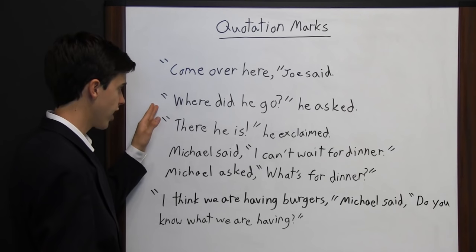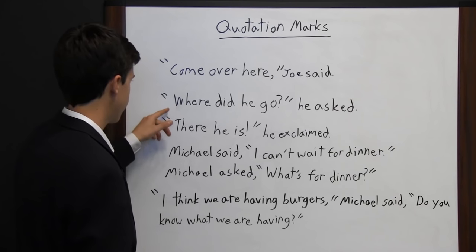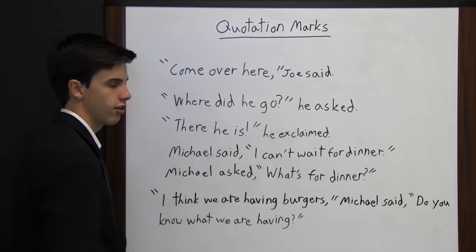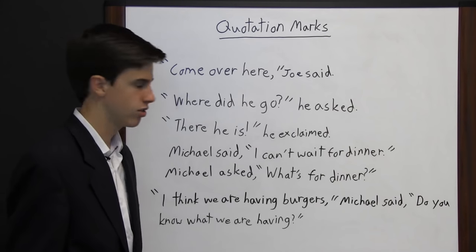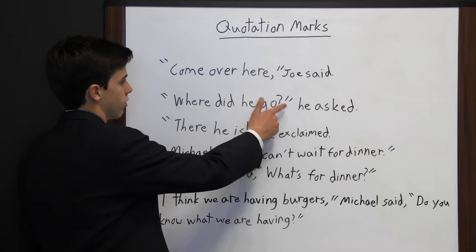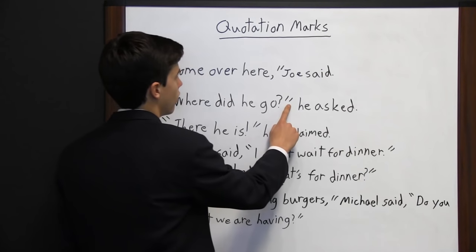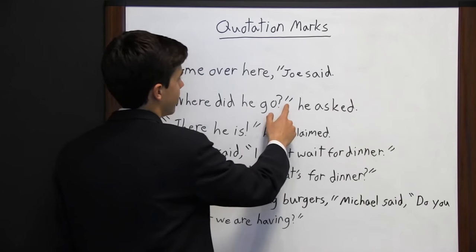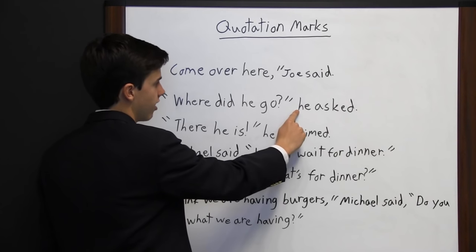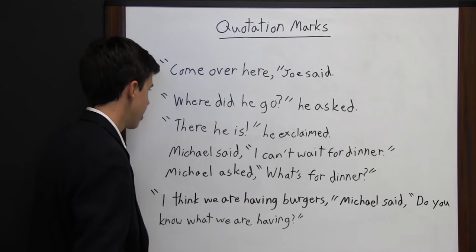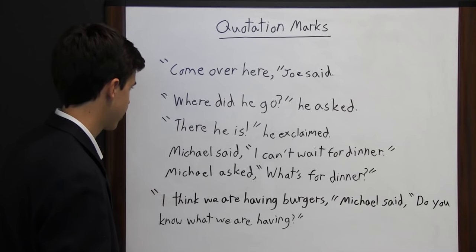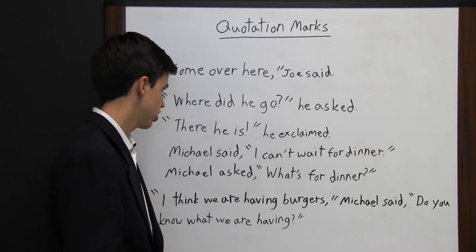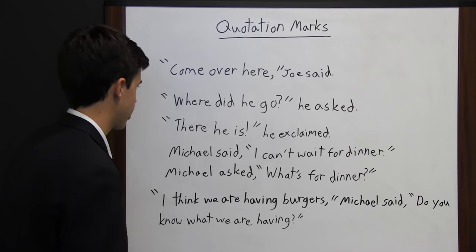For a question: 'Where did he go?' — you open with quotation marks, capitalize the W, and since it's a question, you put a question mark inside the quotation marks before closing them. Notice the question mark is inside, not outside, the quotation marks. For an exclamation: 'There he is!' he exclaimed — you end with an exclamation mark inside the quotation marks because the person is saying it with a lot of emotion.